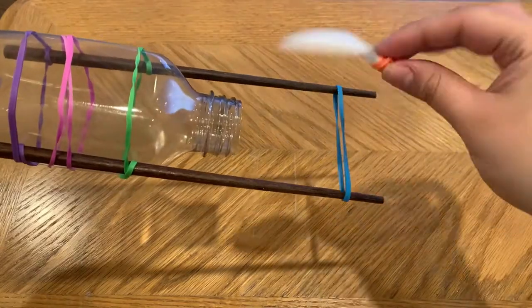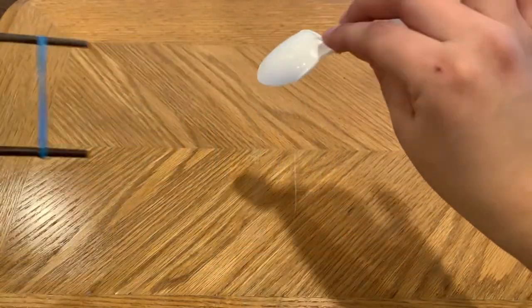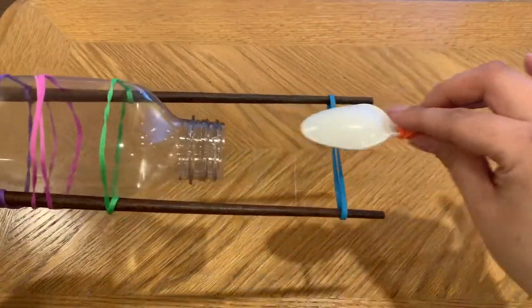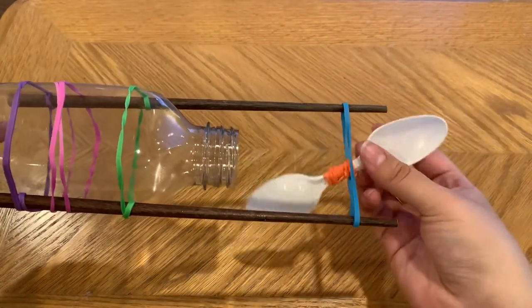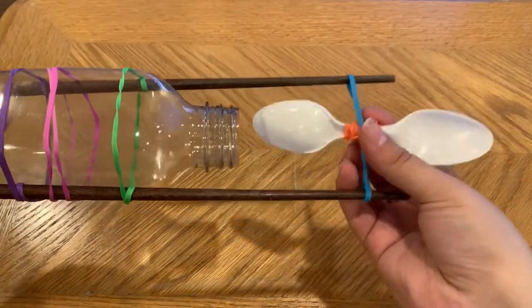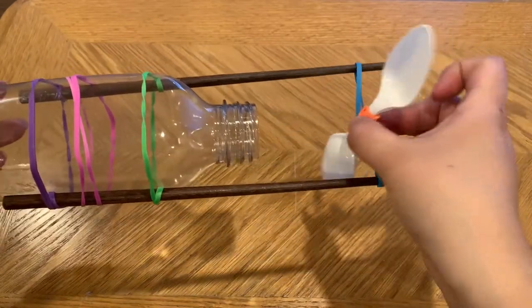I'm rotating my spoons to see which way I need to add my propeller. If I want the water to be scooped backwards, the first spoon going in between the rubber band is going to be upside down.